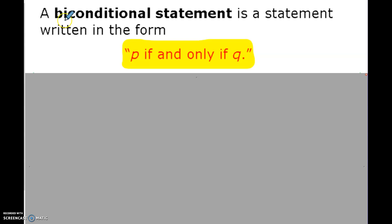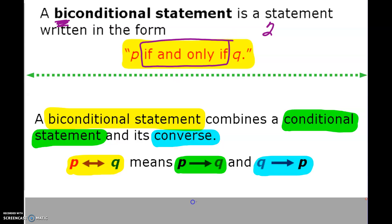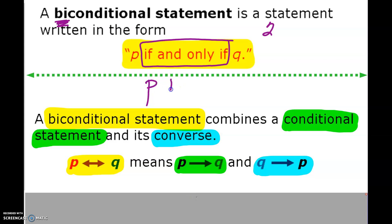Now, biconditional — the prefix 'bi' means two statements. Notice the phrase 'if and only if.' We write that statement as P if and only if Q. If you see 'IFF' with two F's, that is not a typo — it means 'if and only if.' What it means is both statements are true: the conditional statement and the converse are both true. If both are true, then all four statements are true — the inverse and the contrapositive are also true. We say it is true forward and back.